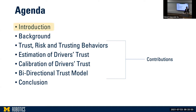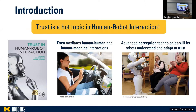We can start by stating something obvious: trust is a hot topic in human-robot interaction, and there are many evidences of that. We can take a look at this book released eight months ago, or think of the attention the topic received at the HRI 2021 conference. Trust is really important because it mediates the relationships between humans and between humans and machines, so we need to trust machines to rely on them appropriately.